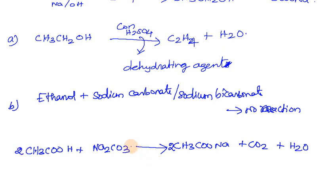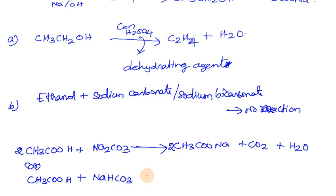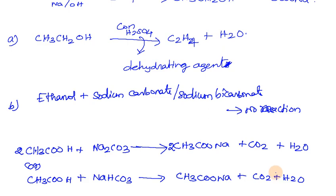The identification reaction: CH3COOH (ethanoic acid) plus NaHCO3 (sodium bicarbonate) gives CH3COONa plus carbon dioxide gas plus water. The carbon dioxide gas produced causes effervescence, confirming the substance is ethanoic acid, while the other test tube containing ethanol shows no reaction.